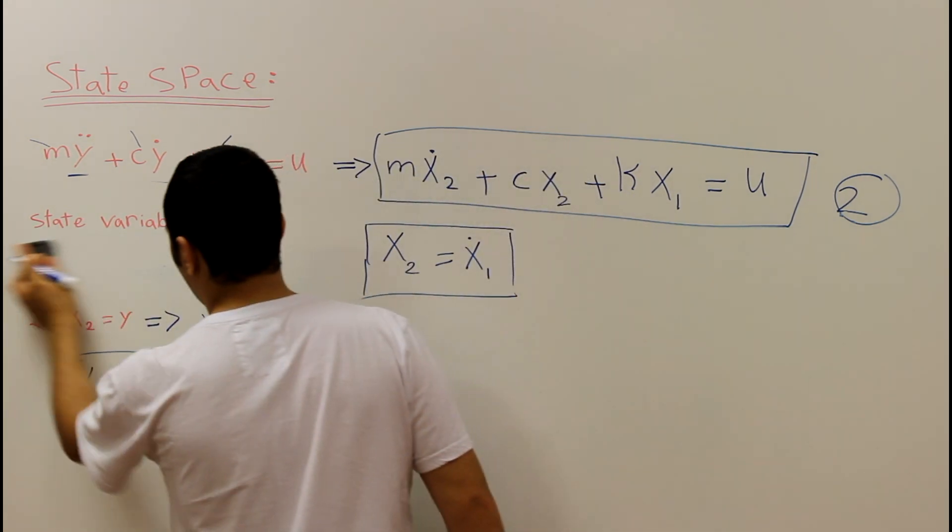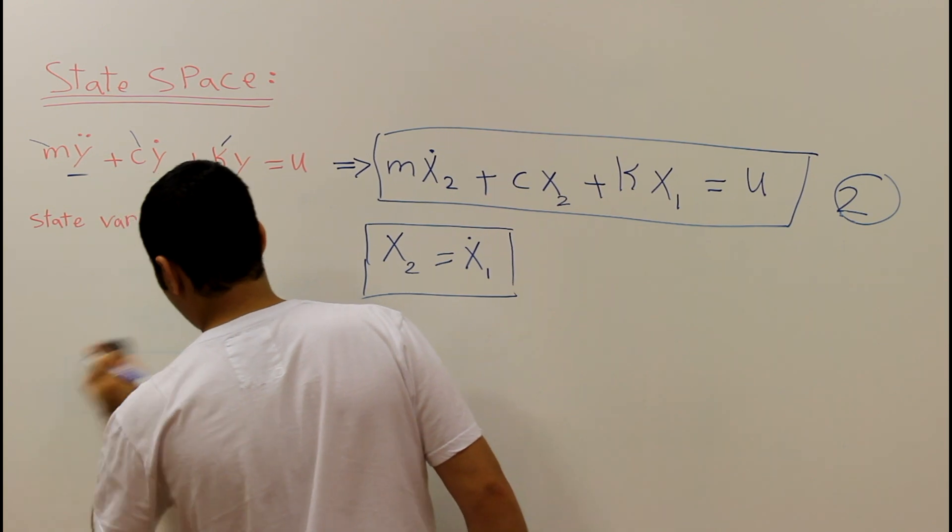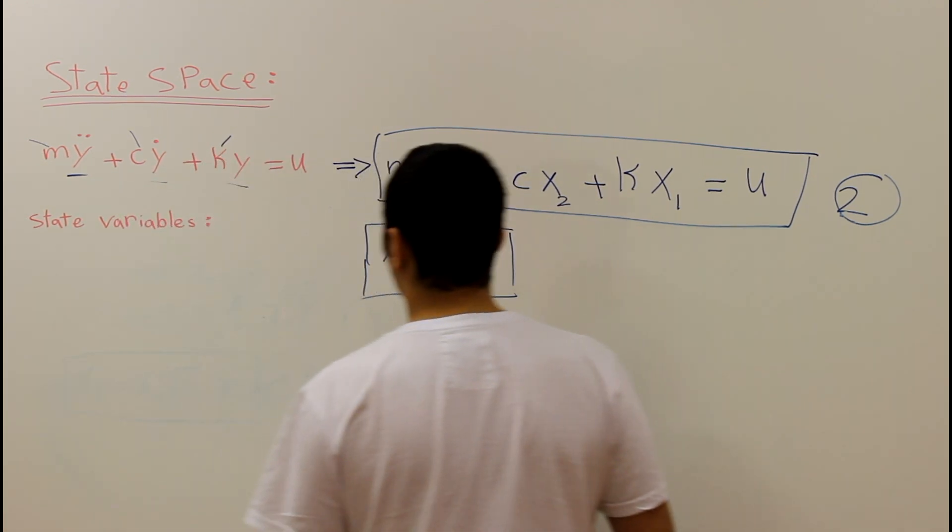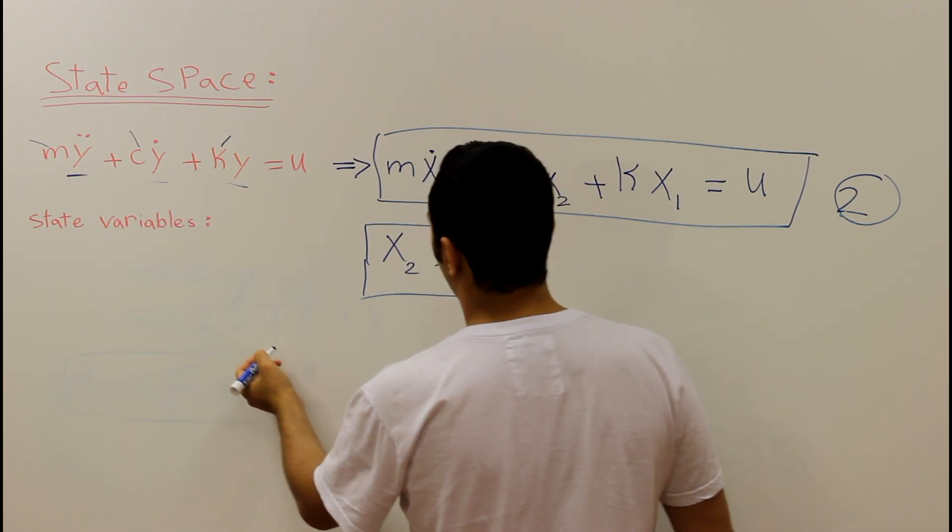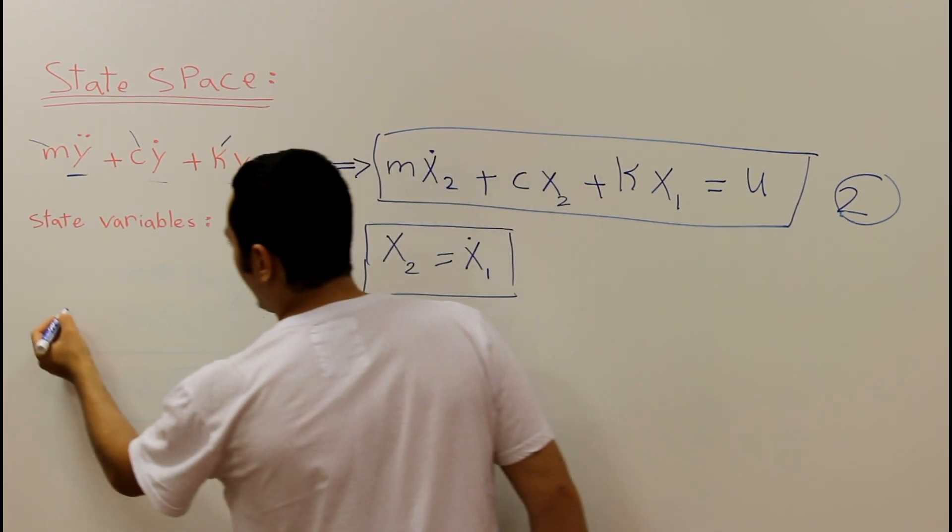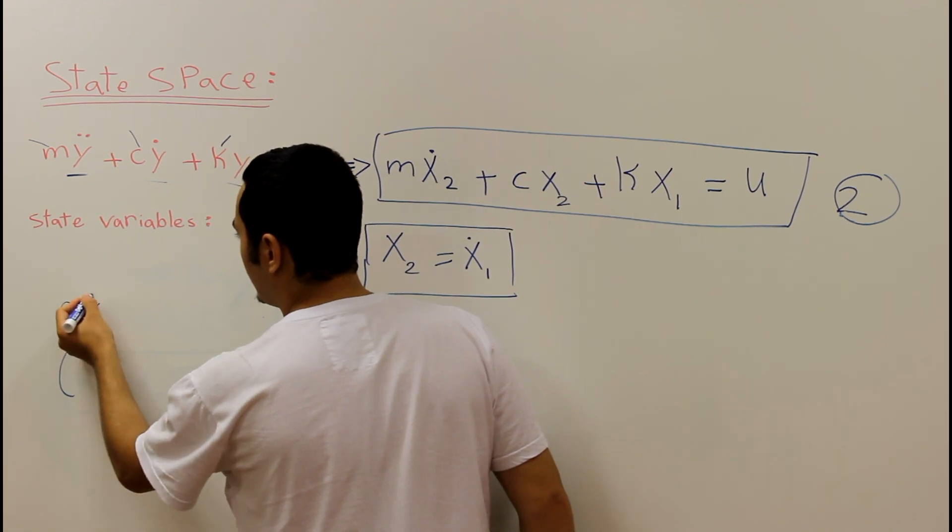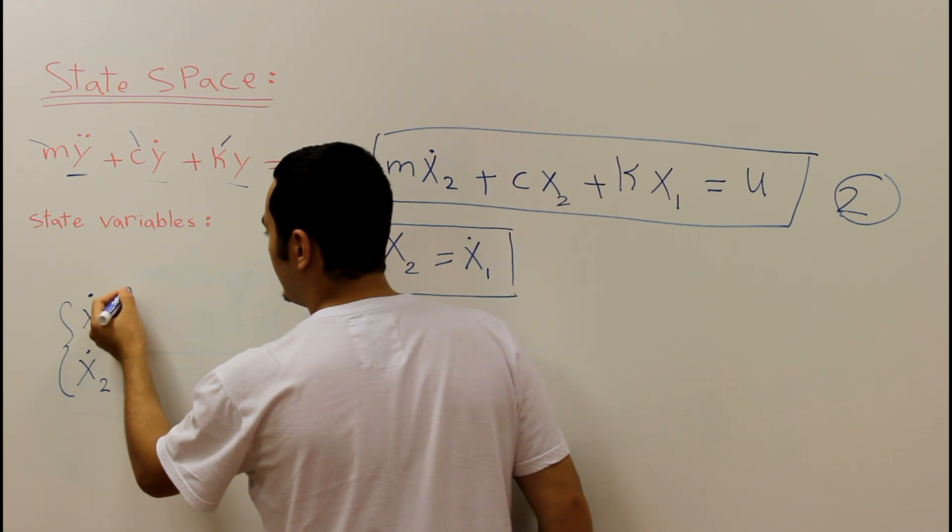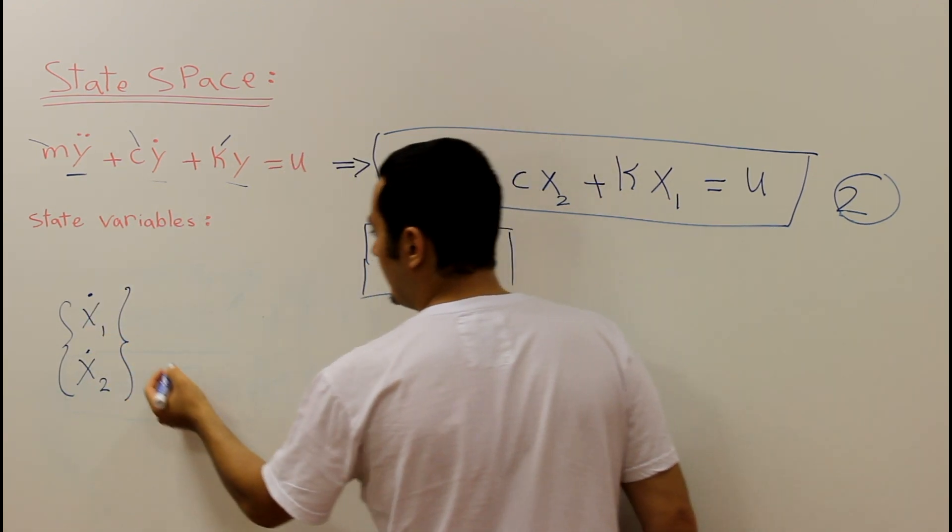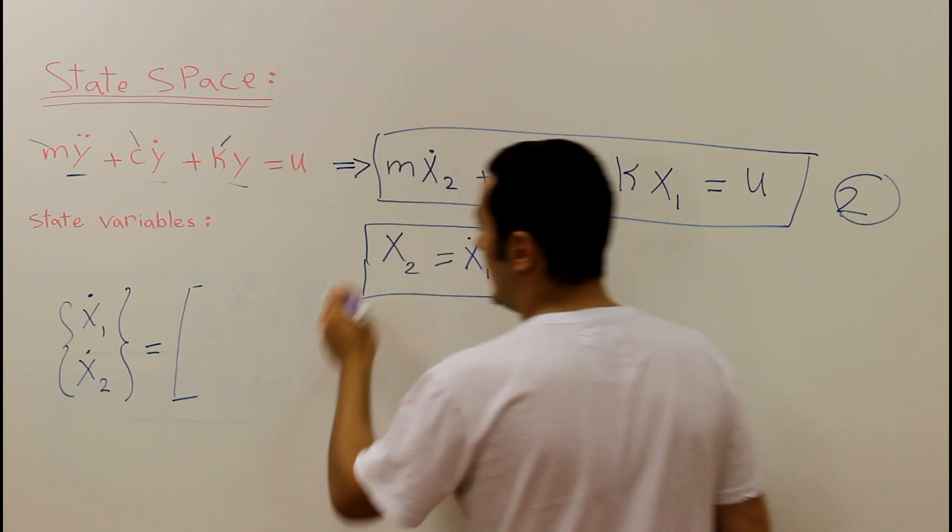Right now, we're done with this part. So in terms of matrices, we will have the following: x1 dot, x2 dot, equal. Since we have two equations